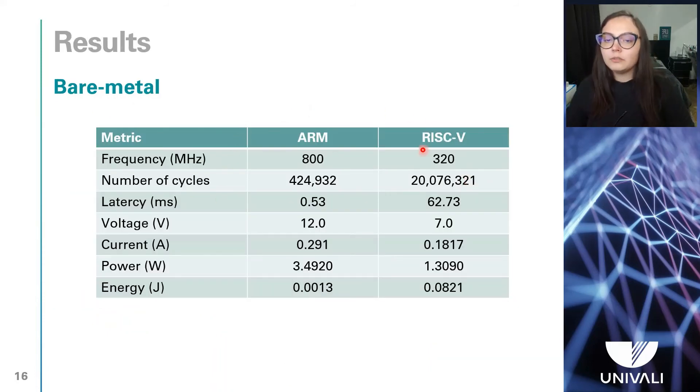This table shows the metrics that we used to evaluate the performance and energy consumption of the Zedboard and the HiFive1 when running the bare-metal code of the CCSDS-123 algorithm. From the results, we can know that the ARM processor is 180 times faster than the RISC-V processor as it works at a higher operating frequency.